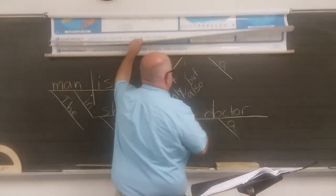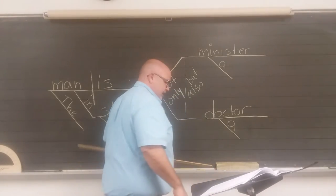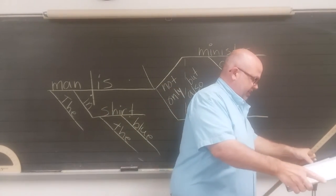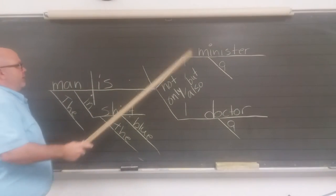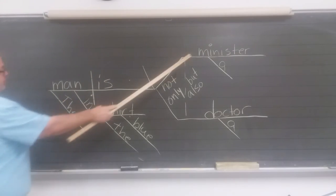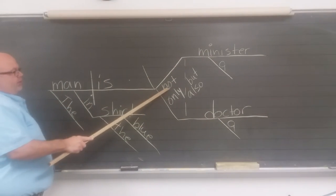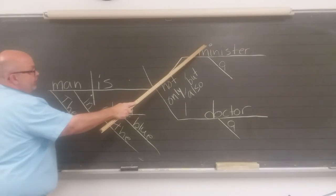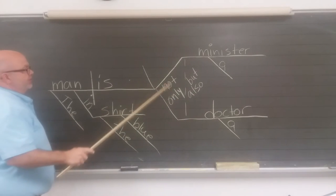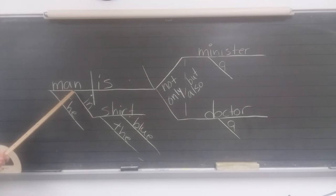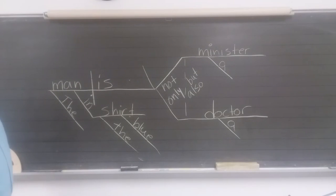Here is the diagram. Here's another diagram with some different things on it — this has indefinite pronouns and a compound predicate nominative. 'The man is minister and doctor' — not only a minister, but also a doctor, using correlative conjunctions. There's a prepositional phrase describing man: 'in the blue shirt.' That is the diagram — check that out.